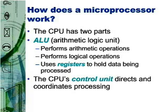Gigahertz, which is usually displayed as GHz, means billions of cycles per second. A cycle is the smallest unit of time in a microprocessor's universe. Every action a processor performs is measured by these cycles.